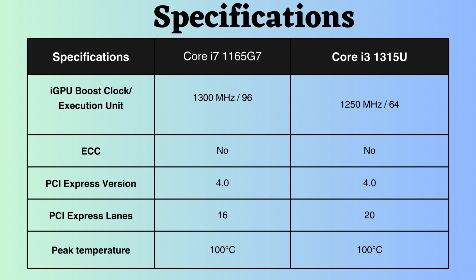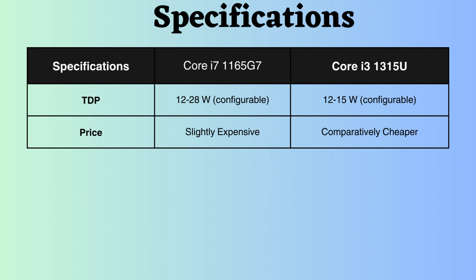Both processors have a maximum operating temperature of up to 100 degrees Celsius. The TDP of both is configurable, with the Core i3-1315U ranging from 12–15W and the Core i7-1165G7 ranging from 12–28W. Considering price, the Core i7-1165G7 is higher than that of the Core i3-1315U.